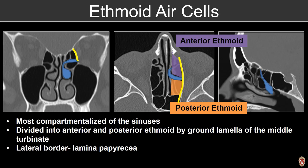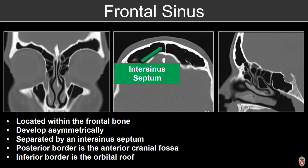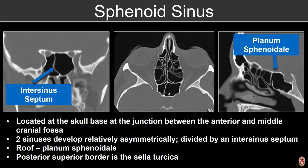The frontal sinus is located within the frontal bone, divided into two compartments by the intersinus septum, and typically develops asymmetrically. It forms the posterior border of the anterior cranial fossa, and its inferior border is the orbital roof. The sphenoid sinus is the most posterior, located at the skull base at the junction between the anterior and middle cranial fossa, also often developing asymmetrically. Its roof is the planum sphenoidale and the posterior border is the sella turcica.